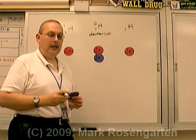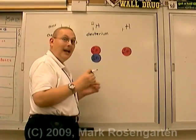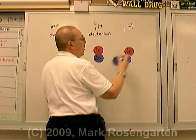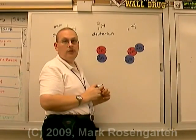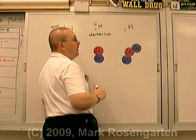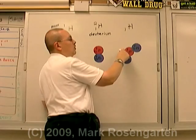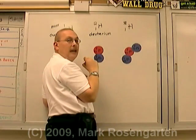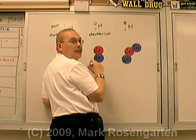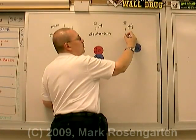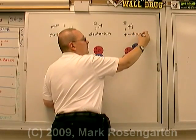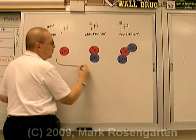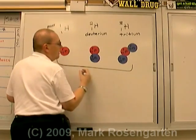The third form of hydrogen, or isotope, contains two neutrons in addition to the one proton. They have a combined mass of one plus two equals three atomic mass units per atom. This isotope is referred to as tritium. These are the three isotopes of hydrogen.